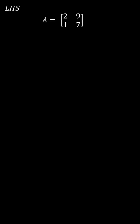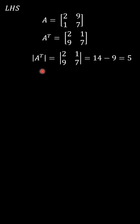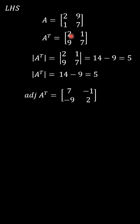Then we find out the left-hand side value. For this, first we have to take the transpose of the A matrix — this row is converted into a column and this row is converted into a column. Next, we take the inverse of A transpose. For this, we take the determinant of A transpose, which is 5. Then we find out the adjoint of A transpose by interchanging the two diagonal elements and changing the sign of these two elements, giving us minus 1 and minus 9. We get the adjoint of A transpose.